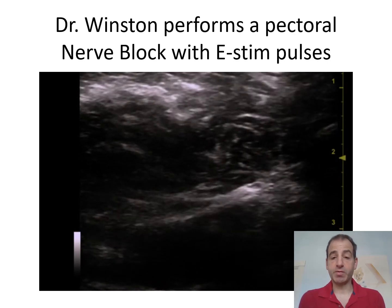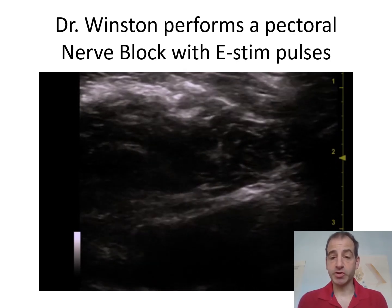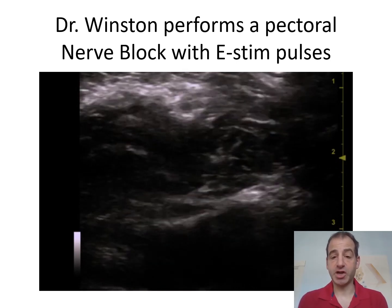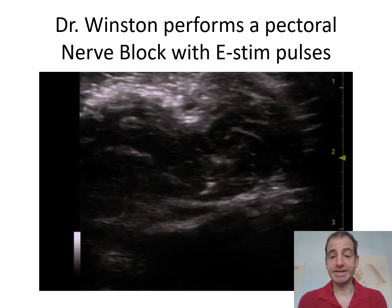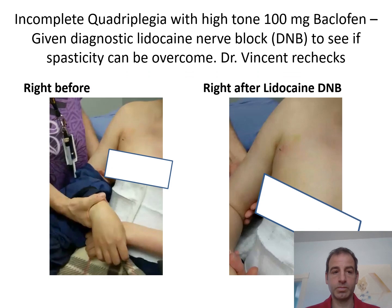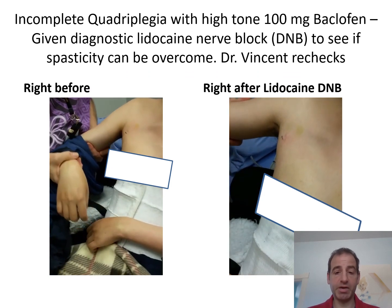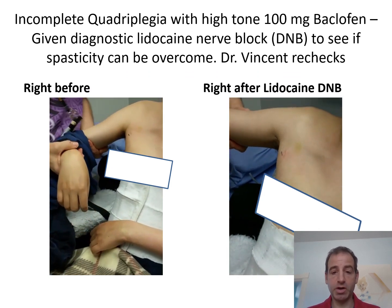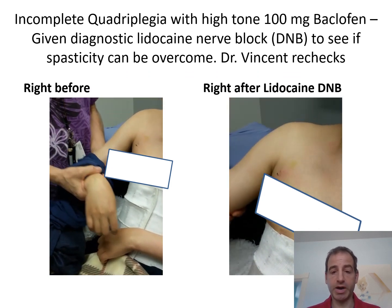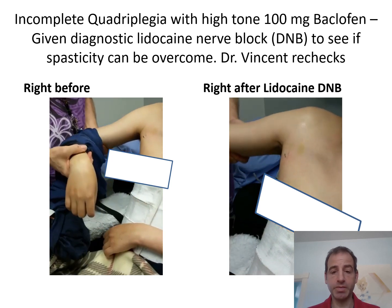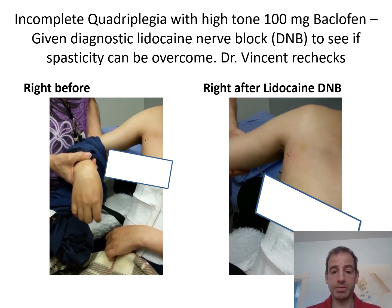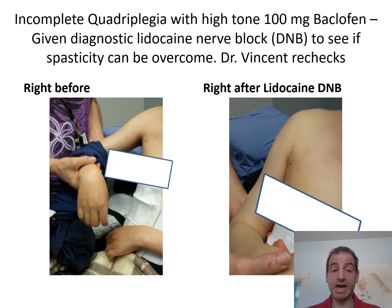I performed a lateral pectoral nerve diagnostic nerve block using ultrasound and e-stim, and paralyzed his pectoral nerves. My anesthesiologist then repeated the nerve block to ensure correct localization prior to the procedure. He was able to reduce them such that the arm would actually abduct overhead.